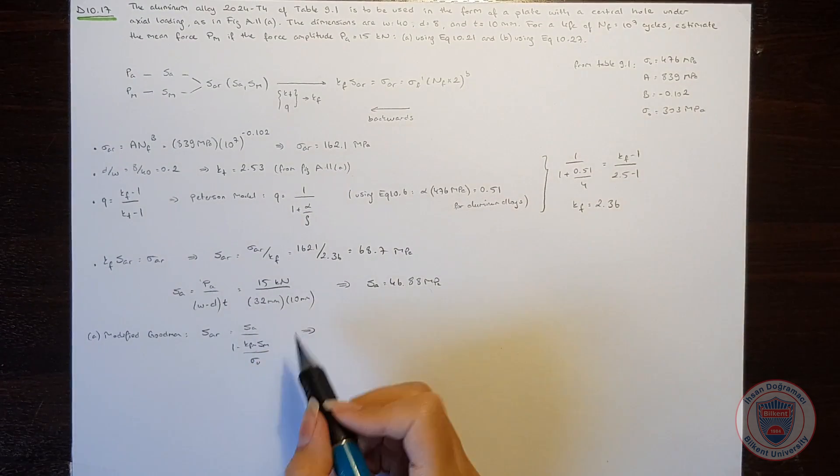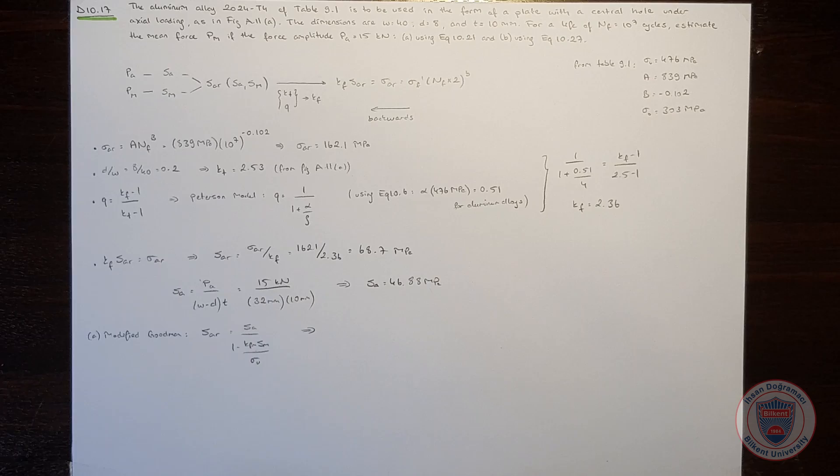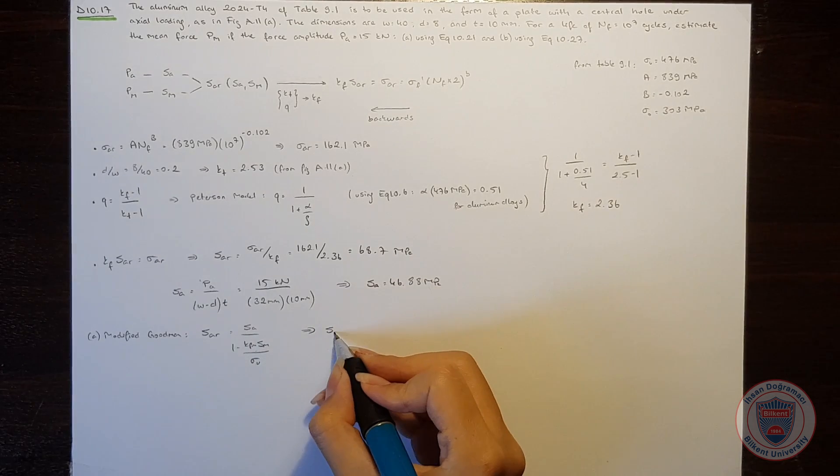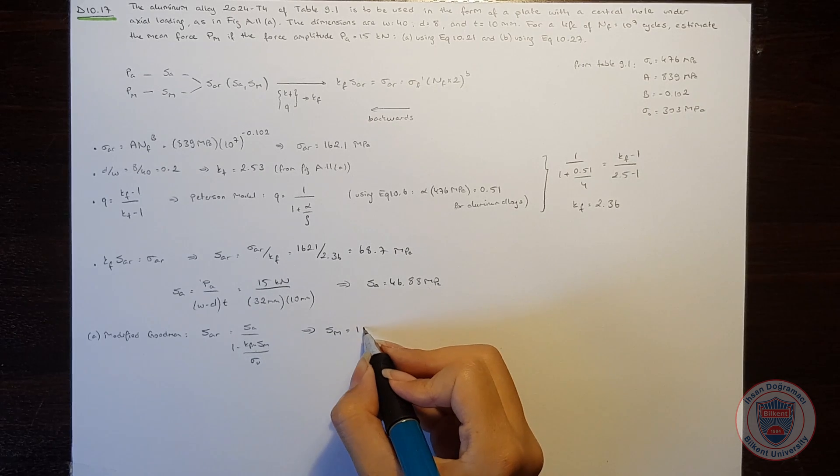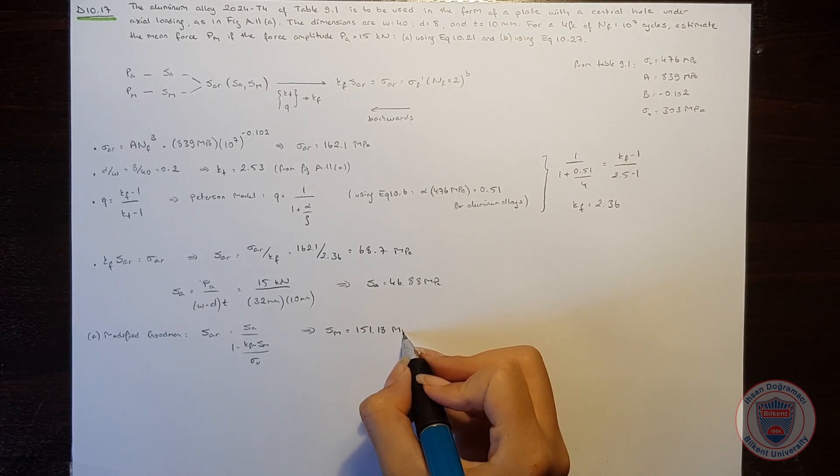The KFm will be 1 since the material is ductile. We know SA, we know SAR and we know sigma U. When we substitute the values we will see that the mean nominal stress will be equal to 151.18 MPa.